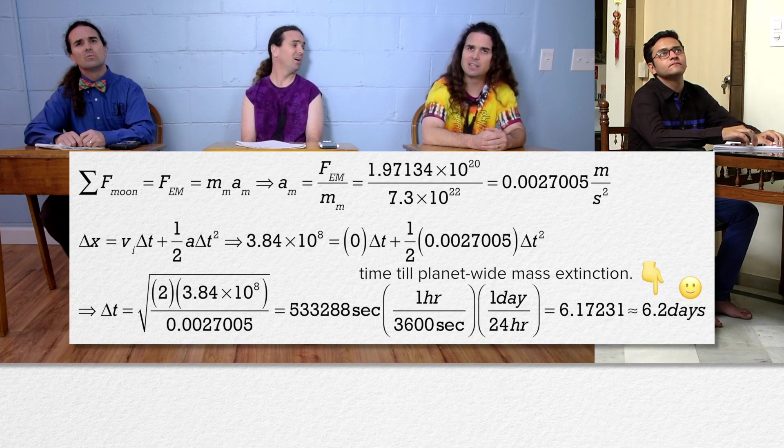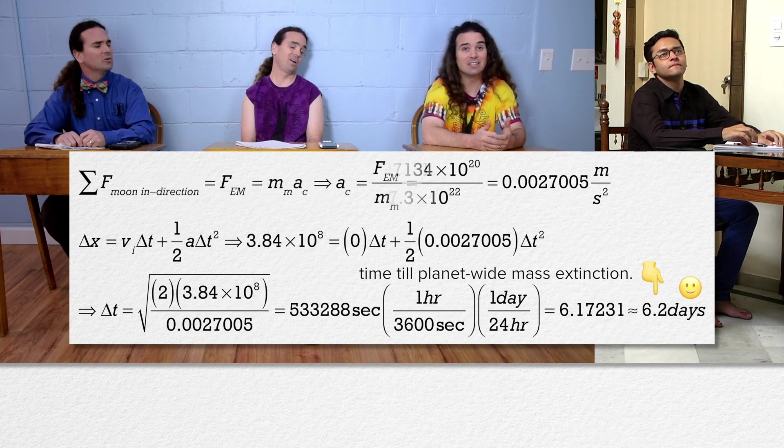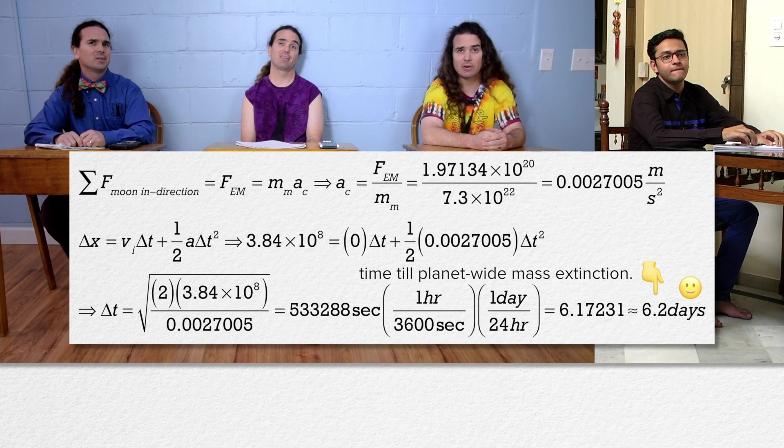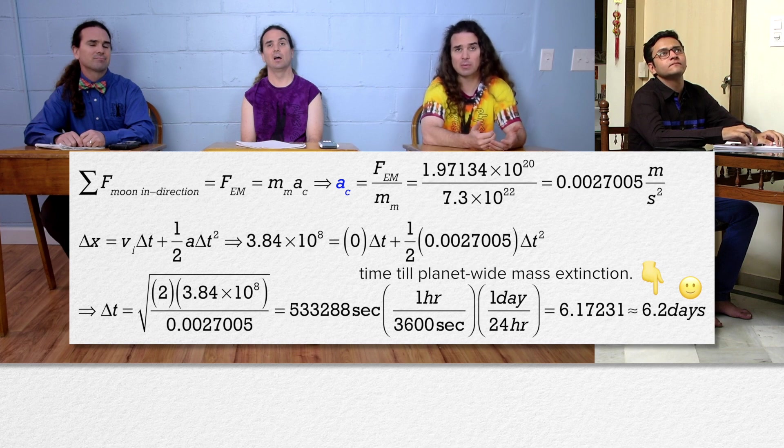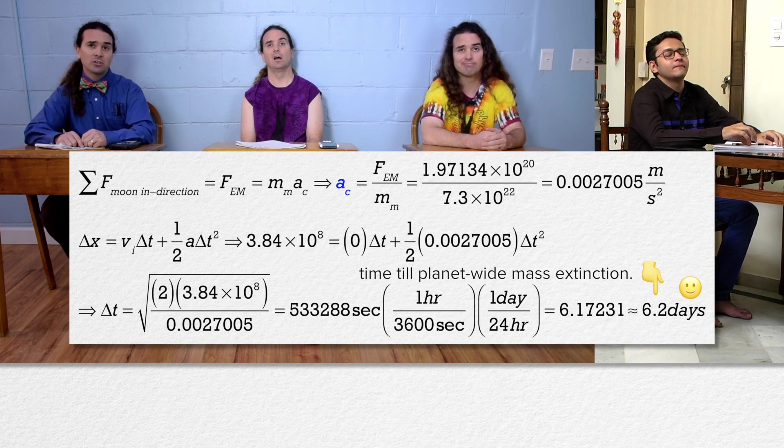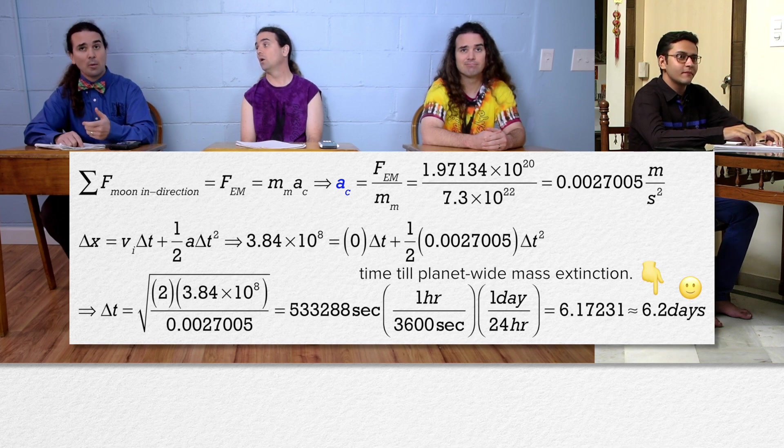He did not identify the direction he summed the forces in. He summed the forces in the in-direction. Therefore, the acceleration of the Moon is a centripetal acceleration. It is the acceleration which keeps the Moon moving in orbit around the Earth. The inertia of the Moon tries to keep it moving in a straight line and the centripetal acceleration keeps it moving in a circle.